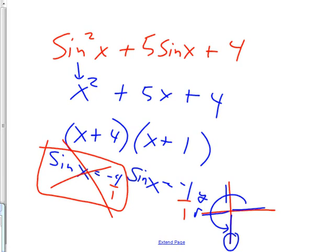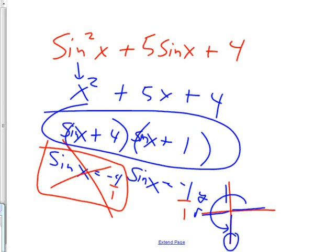Did anyone actually get all the way to the end and get the answer? Nice work — that was tough. Last night on the homework you just had to factor it to sine x plus 4 and sine x plus 1. Today you have to go the extra mile: take those factors, solve them, draw the unit circle picture, and get the actual angle. Final answer: x equals 3π/2.